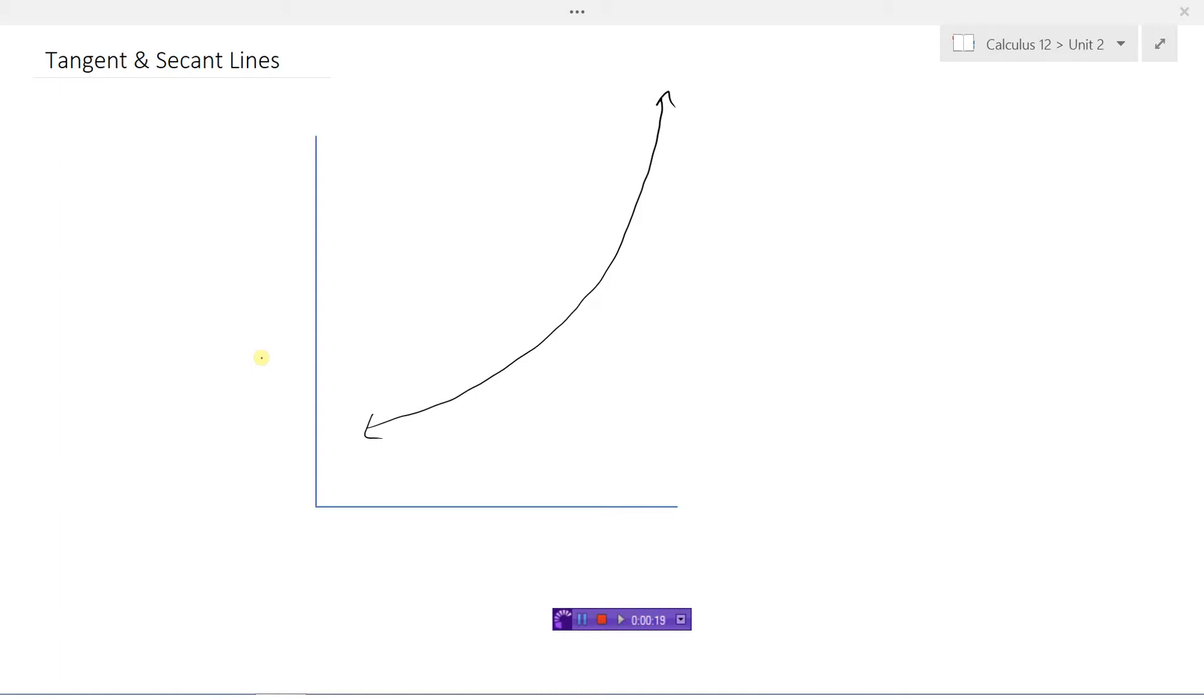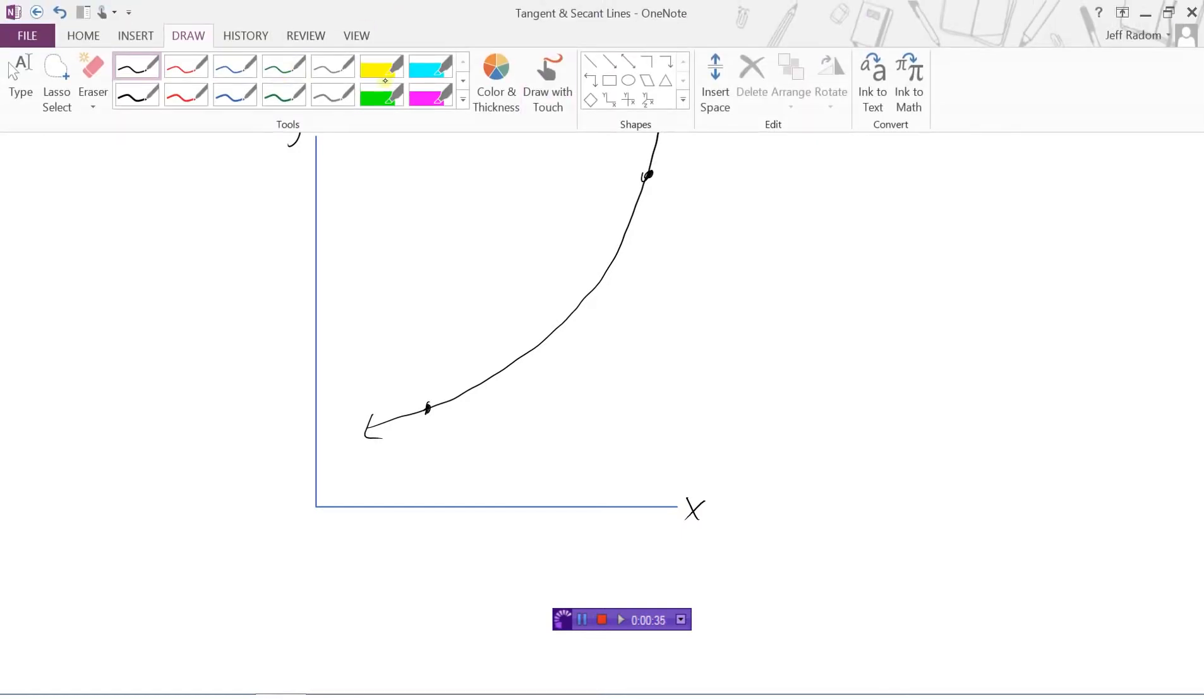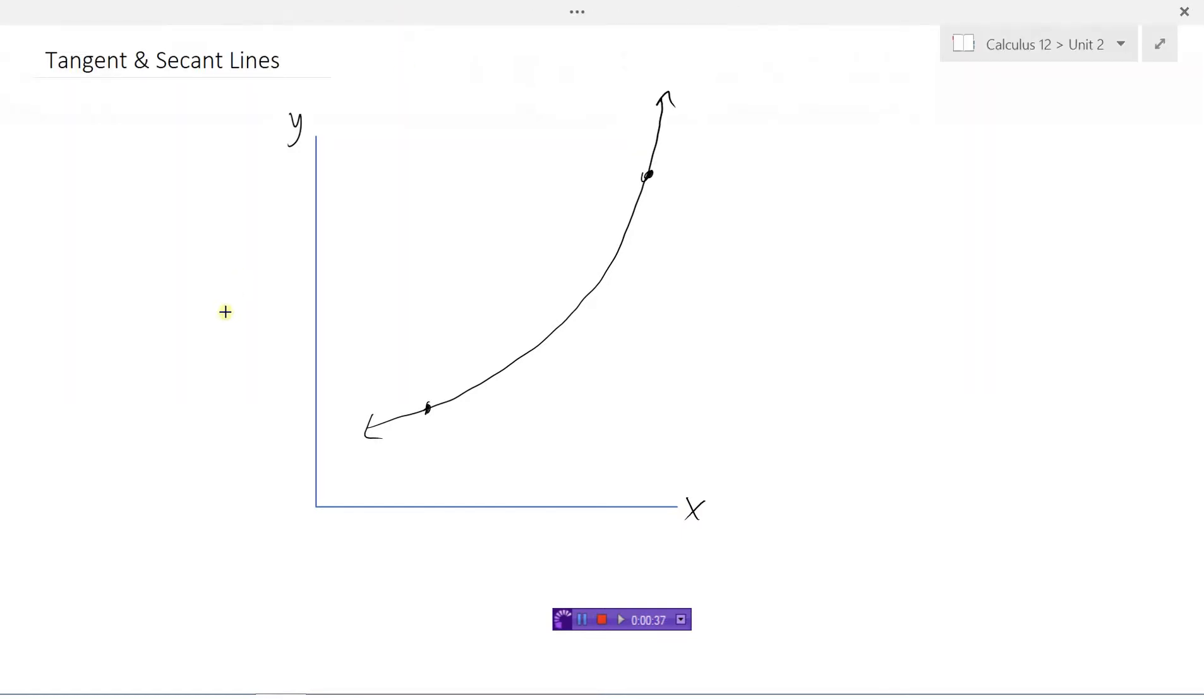Let's just start with the definition of these two terms. I'm going to start with the secant line first. I've got a graph here, this would be the y-axis and this would be the x-axis. I'm going to pick a couple of different points on the graph here and I am going to draw a line through those two points.